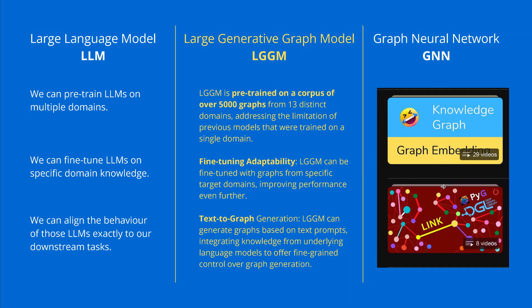Starting from a large language model, a vision language model, a vision language action model, we now jump over to the pure graph neural network with message passing and topological analysis. We have now the large generative graph models pre-trained on a corpus of 5000 graphs, fine-tuned, with text-to-graph generation.